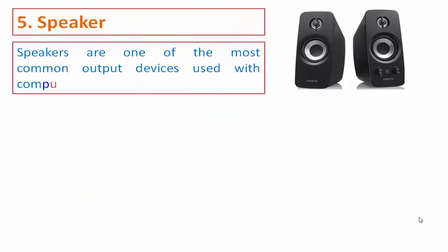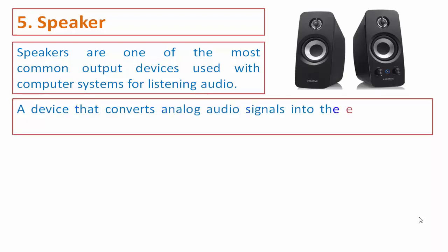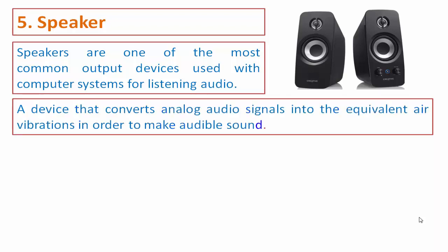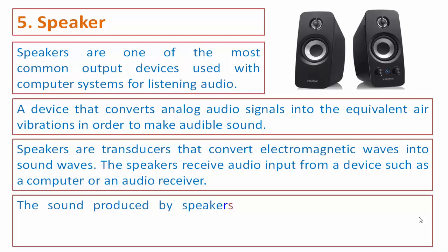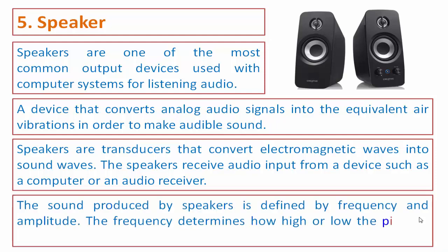Speakers are one of the most common output devices used with computer systems for listening to audio. A speaker is a device that converts analog audio signals into air vibrations in order to make audible sound. Speakers are transducers that convert electromagnetic waves into sound waves. The speakers receive audio input from a device such as a computer or audio receiver. The sound produced by speakers is defined by frequency and amplitude; frequency determines how high or low the pitch of the sound is.